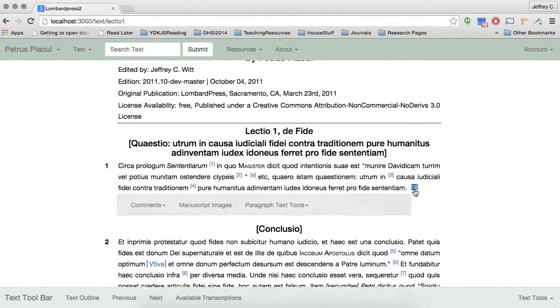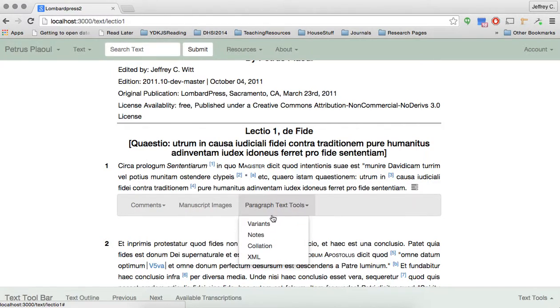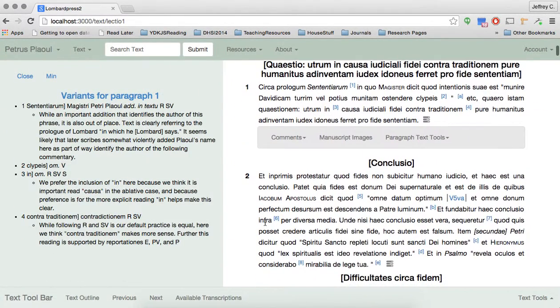What's kind of neat is the ability to get an expanded view of the variants. The text shifts over, the paragraph readjusts, and we get variants for each paragraph. Now, when you hover over, you get a highlighting of the lemma in question. You get the traditional entry, and then underneath it, a note from the critical editor.